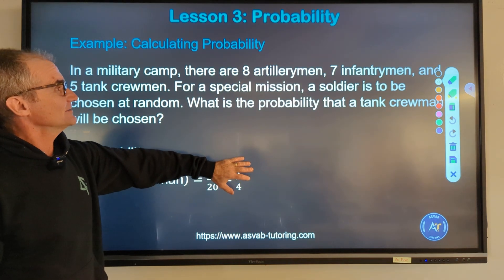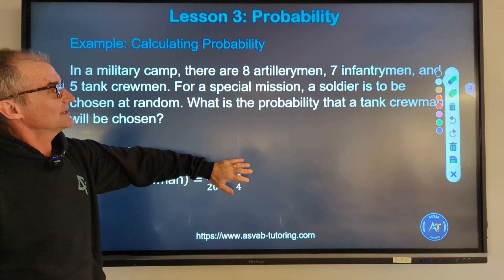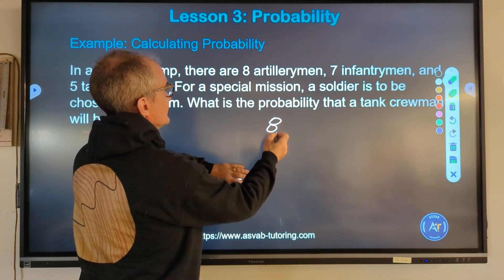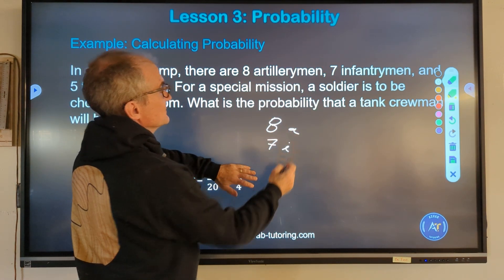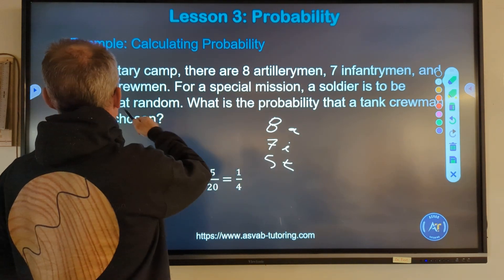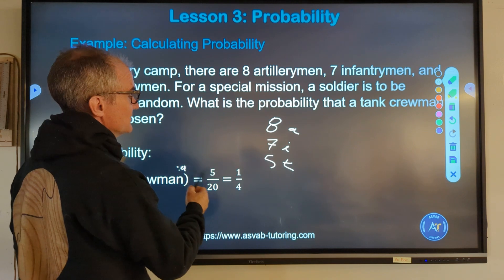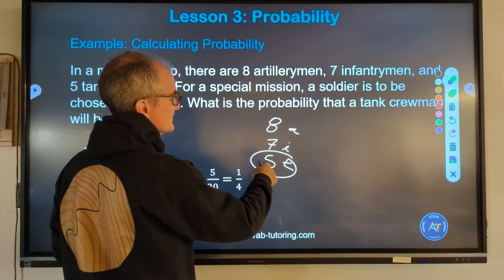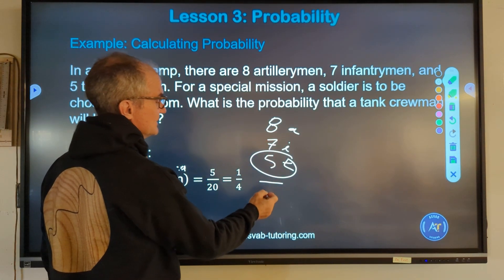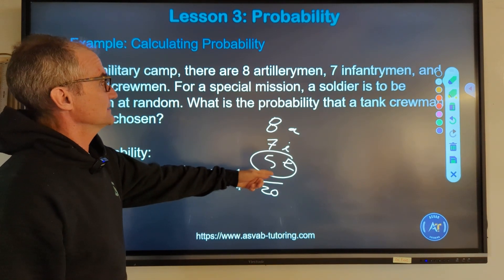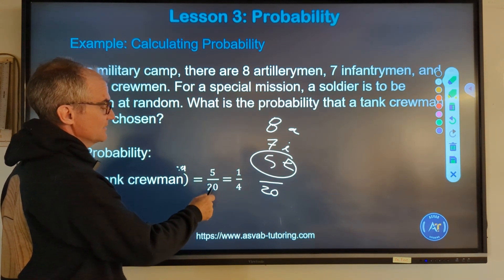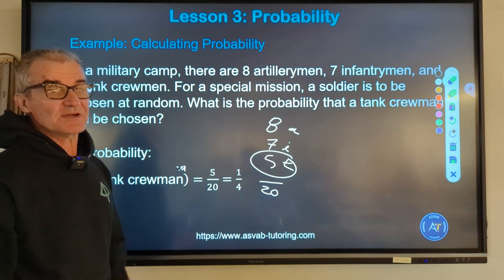Here's an example: I have a single die, I roll it — what's the probability of getting a three? It's a six-sided die, so total possibilities is six. There's one three. So the probability is one over six. In a military camp there are eight artillerymen, seven infantrymen, and five tank crew. A soldier is chosen at random — what is the probability a tank crewman will be chosen? Total: eight plus seven is 15, plus five is 20. The event is picking a tank person: five out of 20, which reduces to one-quarter, or 25 percent, or 0.25.